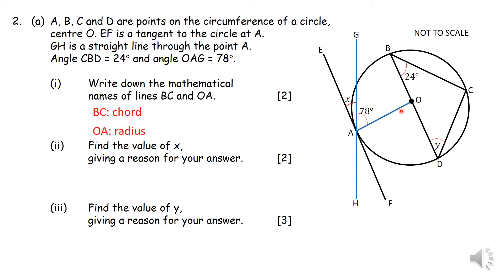OA is a radius. Then you are now asked to find angle x. So what is important is that you should realize that that little angle there plus this 78 should create 90 degrees. And the reason for that is because the tangent EF and the radius are perpendicular to each other.